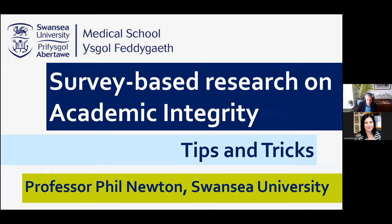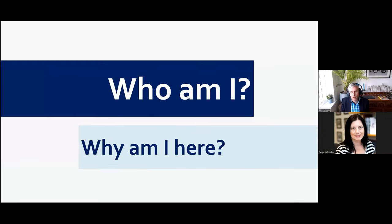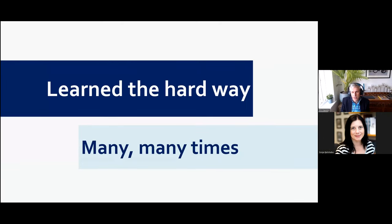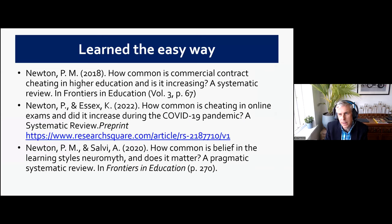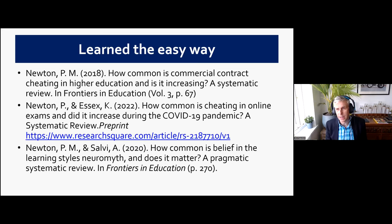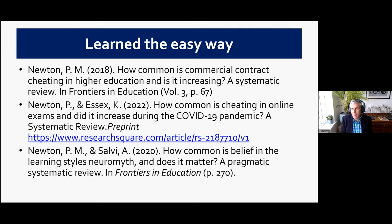I've done lots of research in this area and learned lots of things the hard way. I've also learned some things the easy way — I've done three, soon to be four, systematic reviews of survey-based research in education, mostly in academic integrity. What I found, on a personal level, is quite consoling: lots of us when we do research in academic integrity don't necessarily follow best practice in how to do surveys. It's not just me that's had these challenges, but it means lots of us are conducting survey-based research in ways we could perhaps do a little bit better.